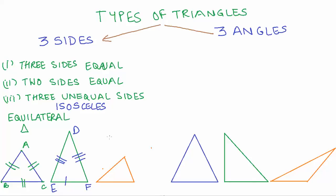Now the third case — let us call this triangle MNO. The lengths of all three sides, MN, MO, and ON, are all different. This type of triangle is known as a scalene triangle.